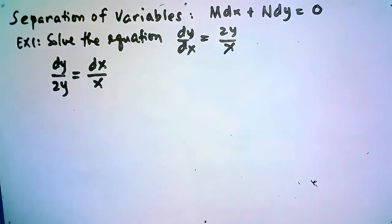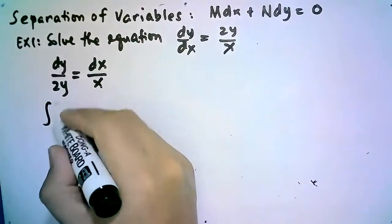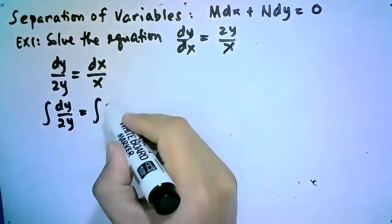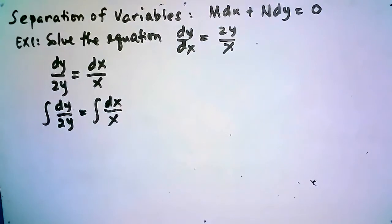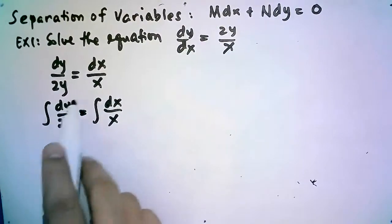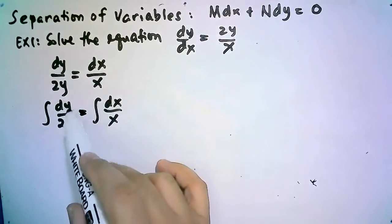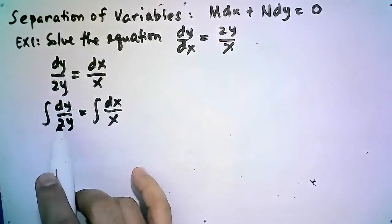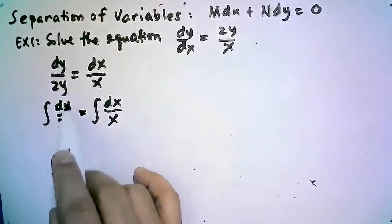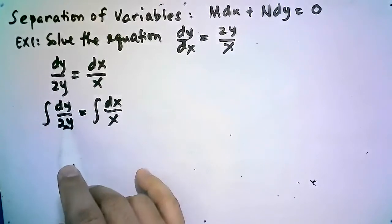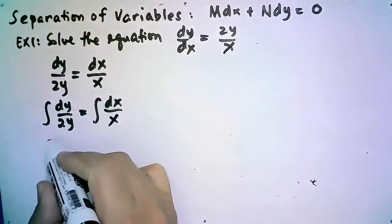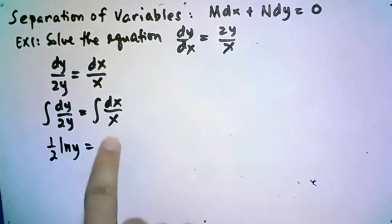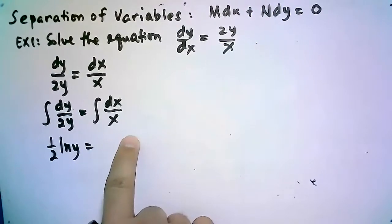The next step is to apply integration to both sides. We have the integral of dy over 2y equals the integral of dx over x. For dy over 2y, we separate the one-half: one-half times the integral of dy over y equals ln y. So we get one-half ln y, which is equivalent to the integral of dx over x, which equals ln x.